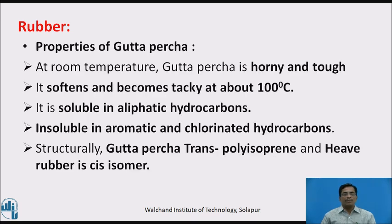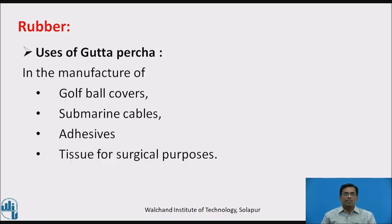Properties of gutta percha: at room temperature it is horny and tough; it softens and becomes tacky at about 100 degrees Celsius. It is soluble in aliphatic hydrocarbons and insoluble in aromatic and chlorinated hydrocarbons. Structurally, gutta percha is trans-polyisoprene, whereas natural rubber is the cis isomer. Uses of gutta percha include the manufacture of golf covers, submarine cables, adhesives, and tissues for surgical purposes.